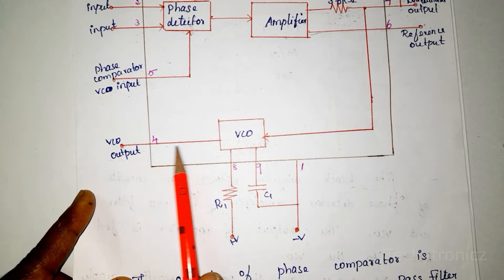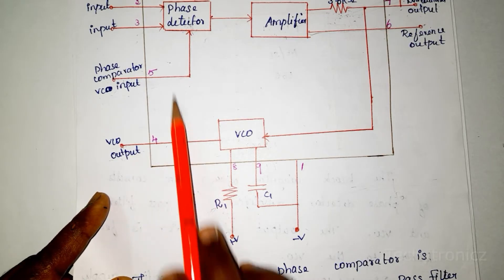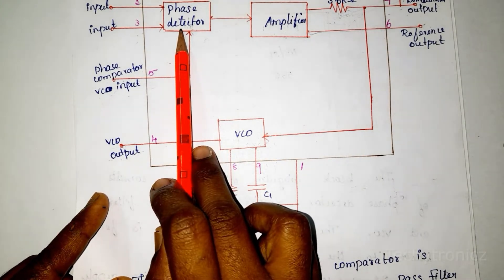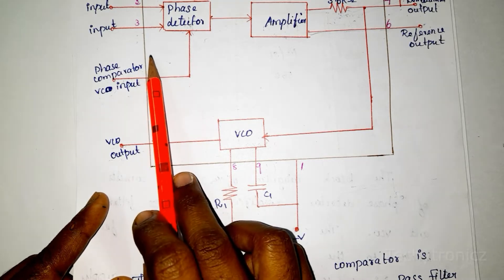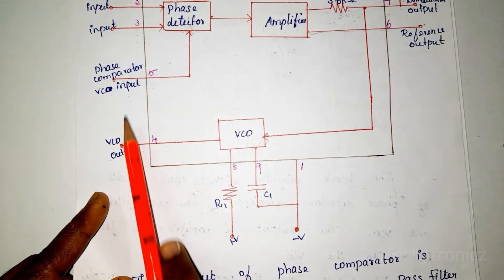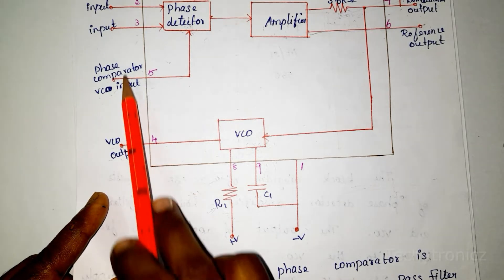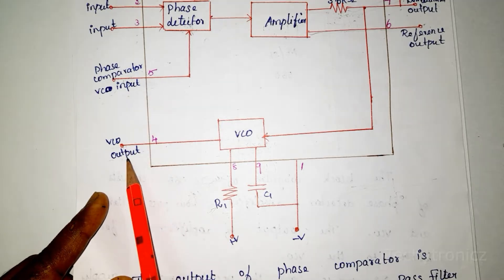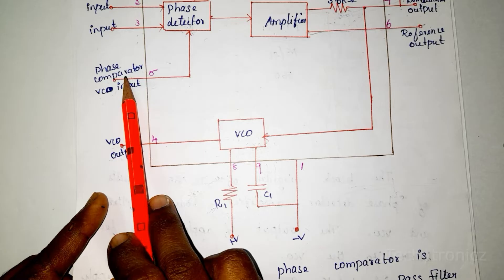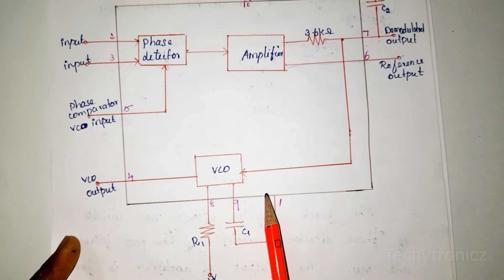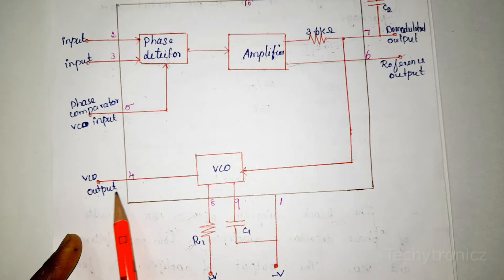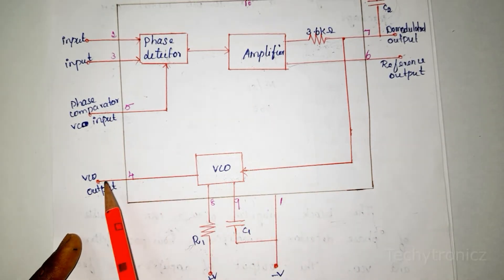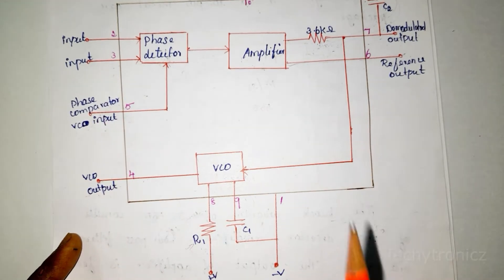Normally the VCO output is not internally connected with the phase detector. If we have to connect it with the phase comparator, we need to give an external connection between pin 4 and pin 5. It is necessary to connect the VCO output to the phase comparator externally — then only it acts as a PLL. If you do not connect pin 4 to pin 5 externally, the circuit acts as a normal VCO circuit. If you connect pin 4 to pin 5, it will be a PLL circuit.